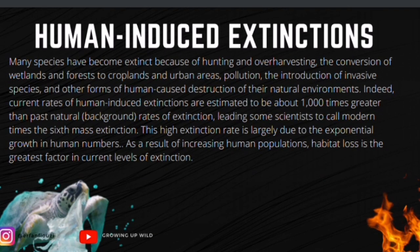Many species have become extinct because of hunting and over-harvesting, the conversion of wetlands, forests, and croplands to urban areas, pollution, the introduction of invasive species, and other forms of human-caused destruction of natural environments. Current rates of human-induced extinctions are estimated to be about 1,000 times greater than past natural background rates, leading some to call modern times the sixth mass extinction. This high extinction rate is largely due to the growth of human numbers; as a result of increasing human population, habitat loss is a great factor in current levels of extinction.